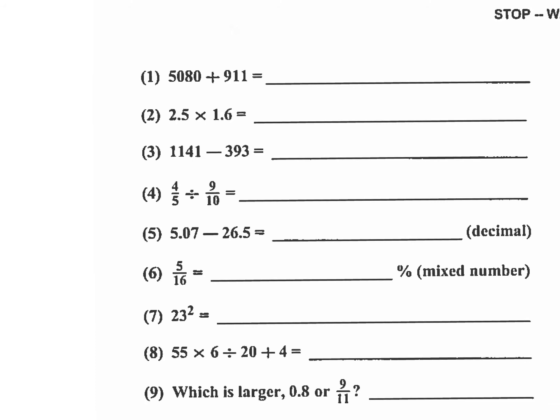Okay starting with problem number one, 5,080 plus 911. I'm going to add 80 plus 11, that's 91. So I write 91 and then I'm going to take care of the hundreds. This is 50 hundred plus 900, that's 5,900. So the answer is 5,991.